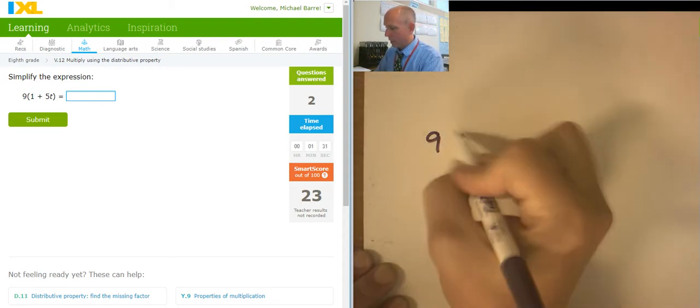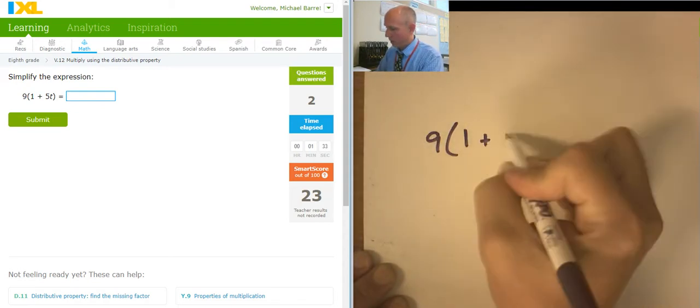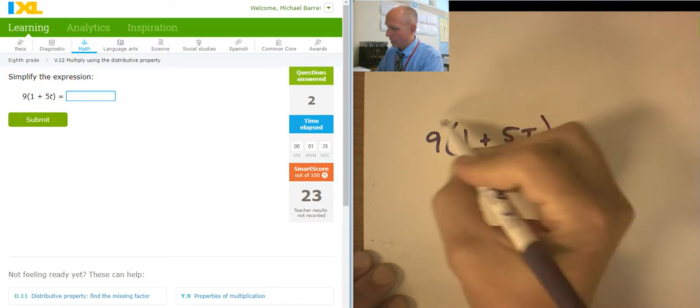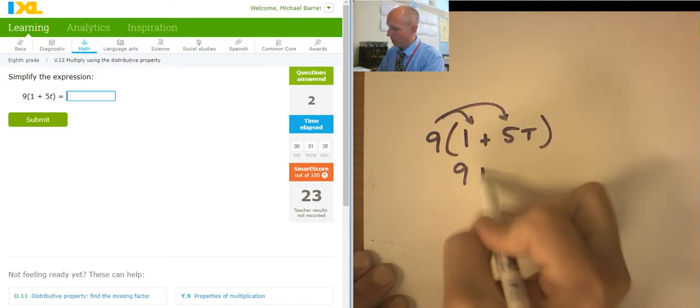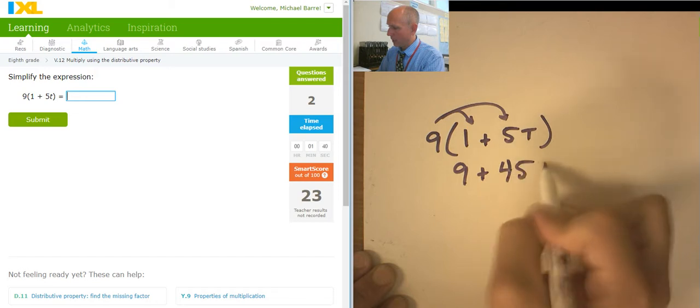So this is 9 times (1+5T). Here it is jumping over. So, 9 plus 45T.